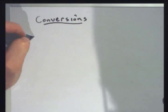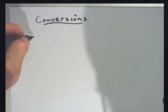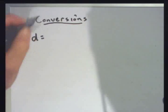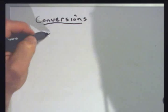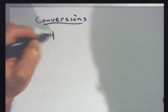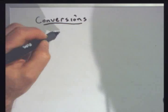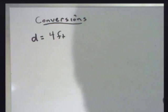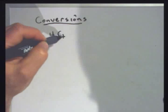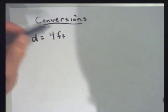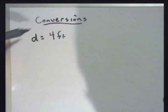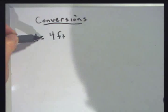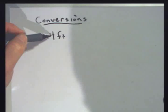Let's say I've got a distance, and I'll use a variable. I've got a distance of 4 feet, and I want to know how many inches that is. Here's how you do it. You say what you're looking for — you're looking for a distance. It's equal to 4 feet.